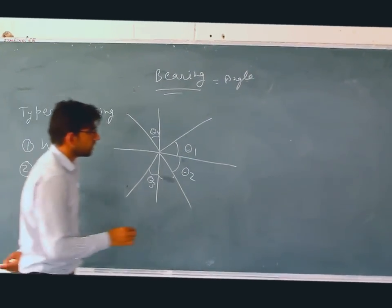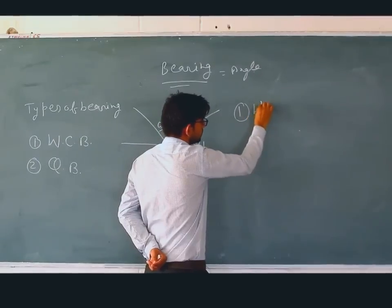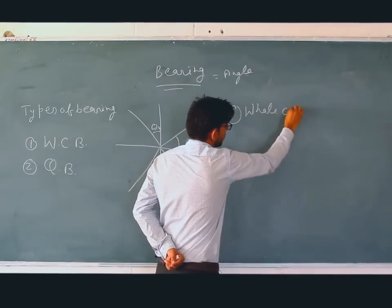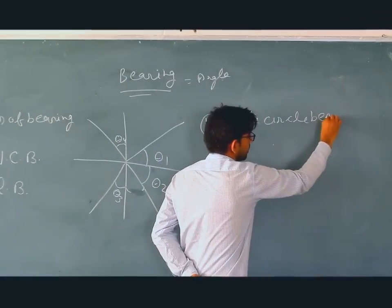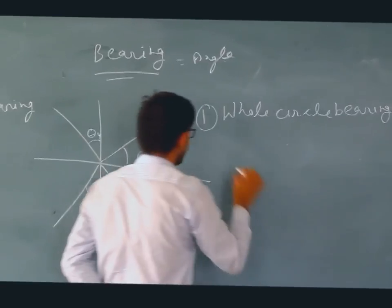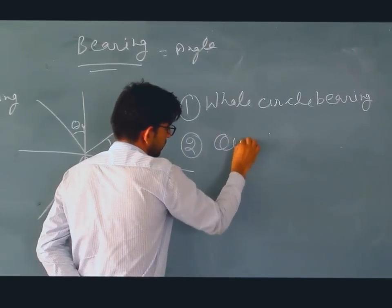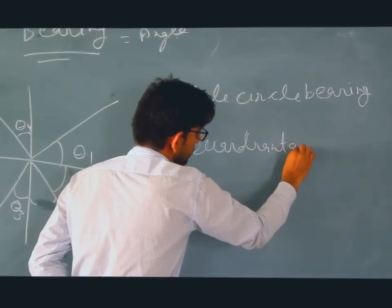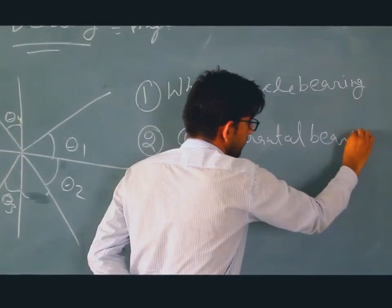Their full names are: Number 1 - Whole Circle Bearing, and Number 2 - Quadrant Bearing.